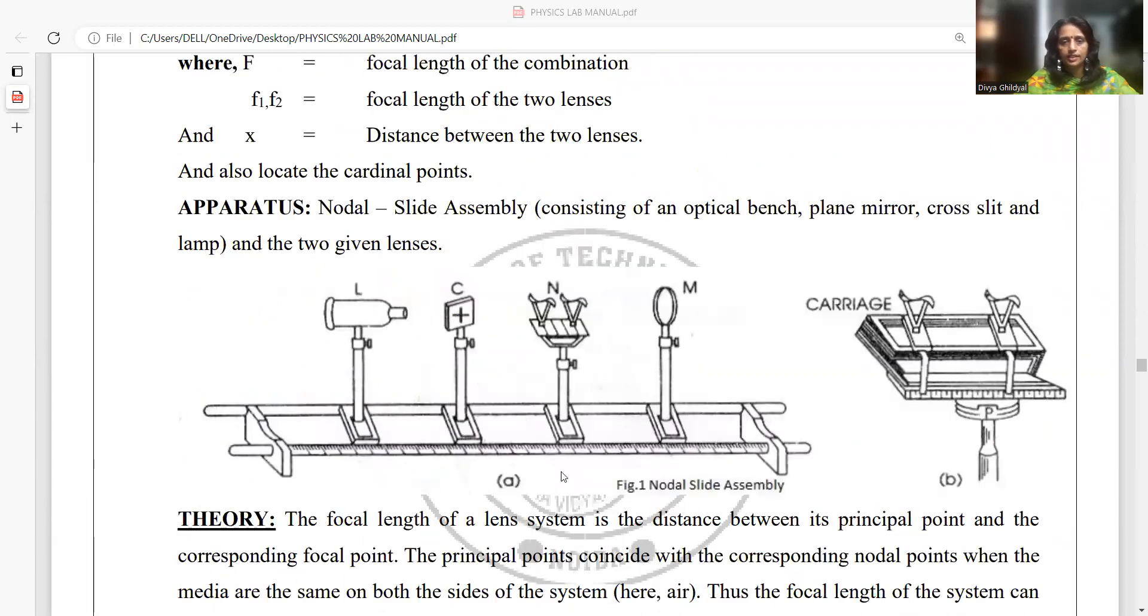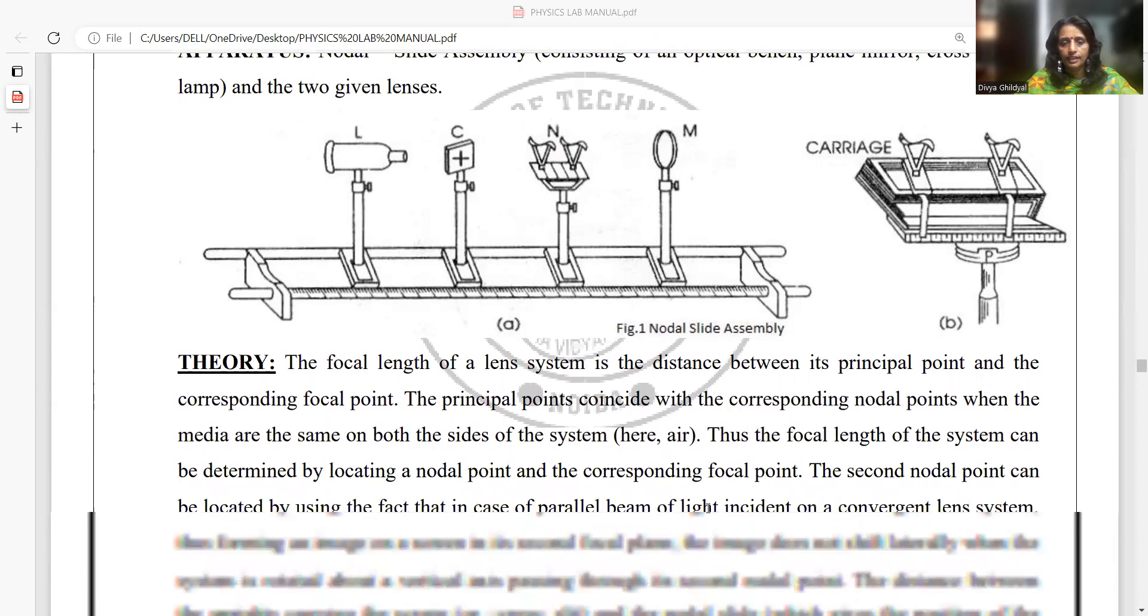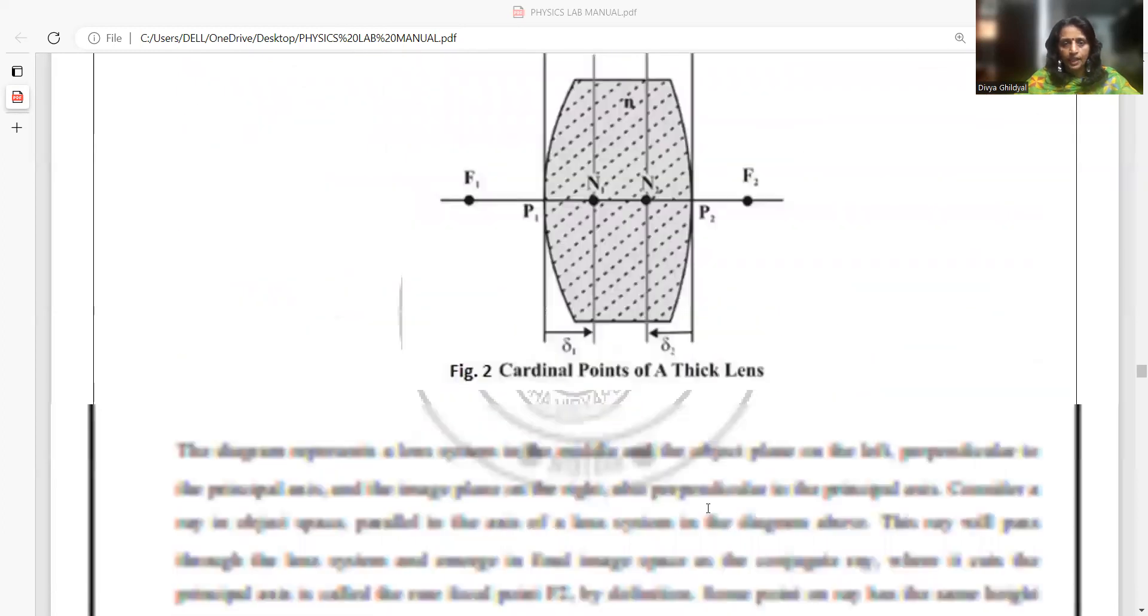The experimental setup consists of an optical bench with a source of light (an ordinary bulb), a cross slit, a nodal slide stand, and a plane mirror on which the image falls, and you can track the image of the cross slit.